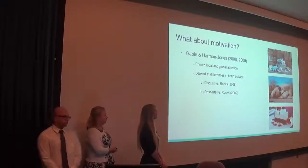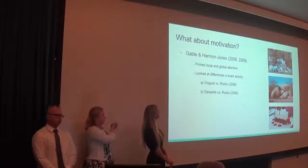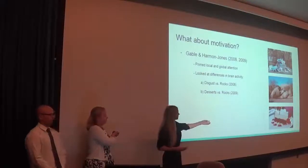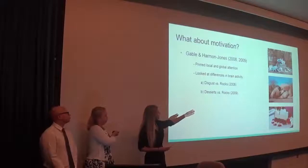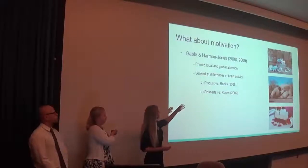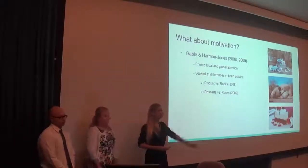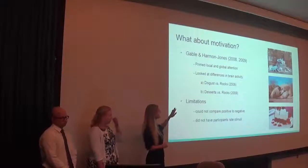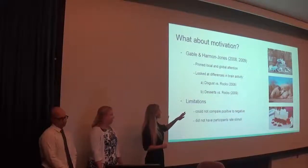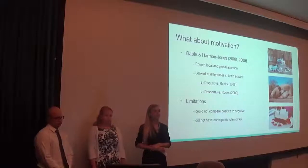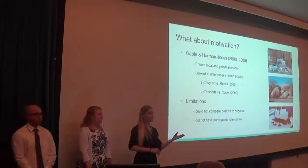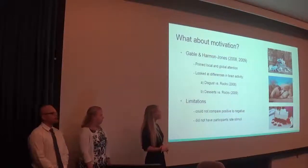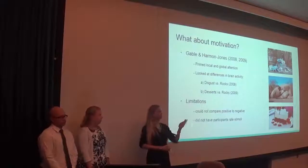They had two different studies. The first looked at disgust versus rocks. Their overall stimuli were positive — desert images — neutral, using rock images, and negative, shown through disgust images such as trash. In their first study they looked at disgust versus rocks, and in the second they looked at deserts versus rocks. The results indicated a greater allocation of attention for the negative images compared to the neutral ones, and also a greater allocation of attention for the positive images compared to the neutral ones.